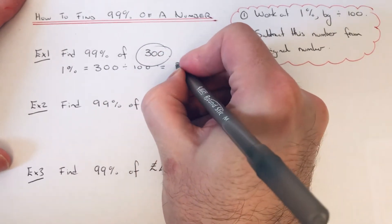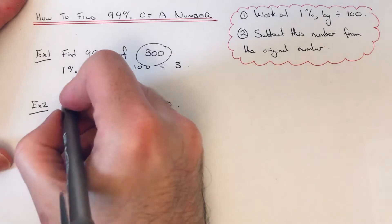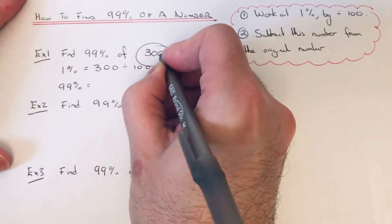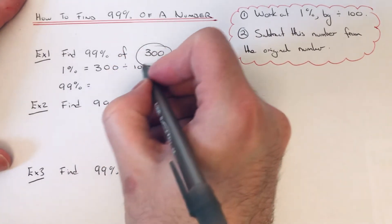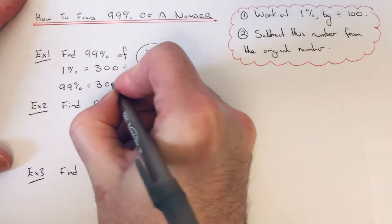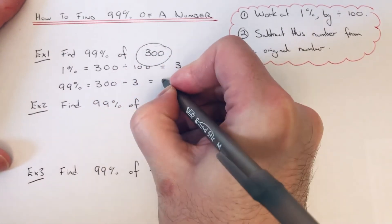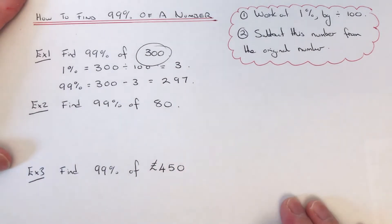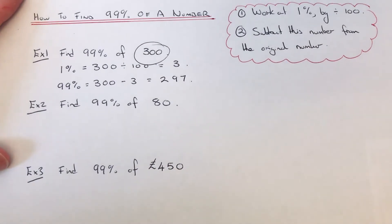And then to get 99%, we just take the 3 off the 300 because the 300 is 100%. So 300 minus 3 is 297. So let's have a look at the second example.